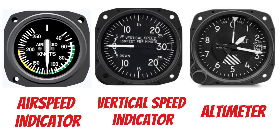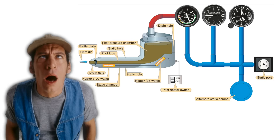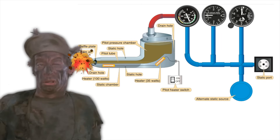We've already talked about the altimeter quite a bit in the previous lessons, but we need to talk about what causes it and these other instruments to work so you'll know when there's something wrong. You don't want to rely on something that might kill you. So let's get started by taking a look at how these instruments work.